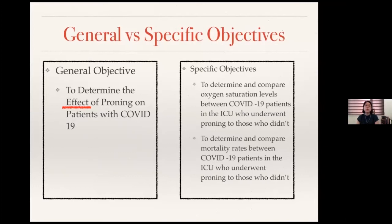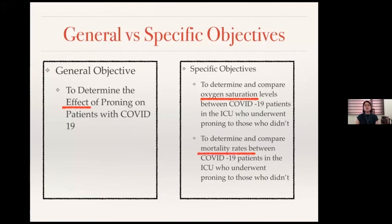For example, to determine and compare oxygen saturation levels — that is specific and measurable, as well as more time-bound and relevant for our research. Another outcome variable is to determine and compare mortality rates among COVID-19 patients in the ICU who underwent proning to those who didn't. Mortality rate is measurable — you can see if they die or they live. And it's very time-bound because you'll stop monitoring when the patient dies or when the patient leaves the ICU and lives. So this way, you end up having SMART objectives.